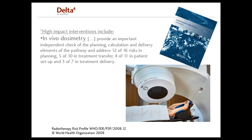The radiotherapy risk profile was published by the World Health Organization. It has identified thousands of published adverse events and near misses between 1976 and 2008, both in the Western world and in several developing countries. What this publication states about accident prevention is that a very efficient method of preventing accidents is in vivo dosimetry, and this is something that can be done with, for example, a transmission detector.